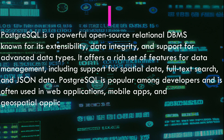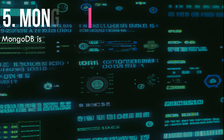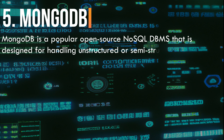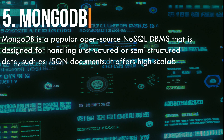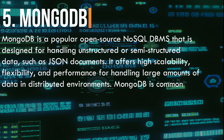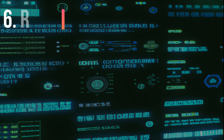Five: MongoDB. MongoDB is a popular open-source NoSQL DBMS designed for handling unstructured or semi-structured data, such as JSON documents. It offers high scalability, flexibility, and performance for handling large amounts of data in distributed environments, and is commonly used in modern web applications, mobile apps, and IoT applications.